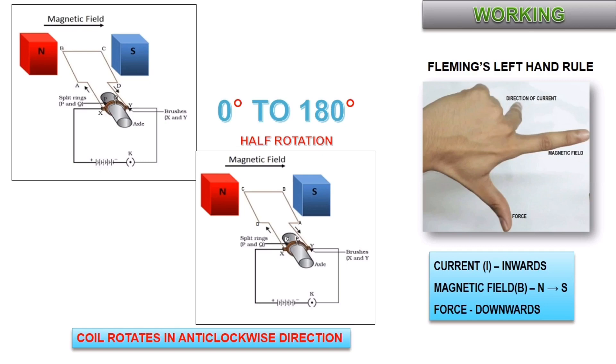After half rotation, Q makes contact with brush X and P with brush Y. That is, the direction of current in the coil gets reversed along the path DCB. Let us analyze the working a little more deeper.